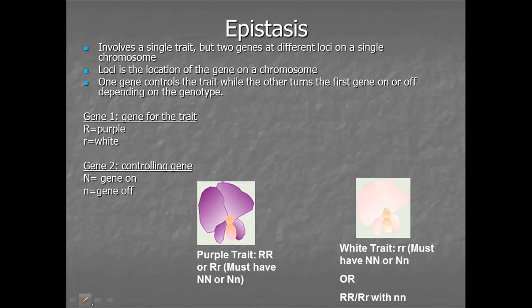So there's a vocab word here that you want to make sure you get. A locus is a location on a gene. So if this was on chromosome 15, one gene might be here and the other one might be at a different location down towards the bottom. Now, in epistasis, 'epi' means upon. One of these traits is affecting or working upon the other one — one gene is controlling whether or not the other gene is turned on or off.